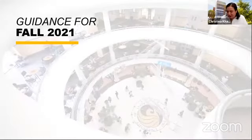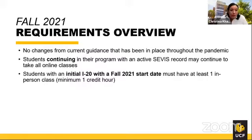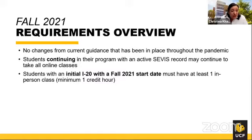Let's jump into the guidance for Fall 2021. SEVP recently clarified their guidance, and because of this clarification, there are no changes to the current guidance that's been in place throughout the pandemic. For continuing students enrolled at UCF for at least a few semesters, nothing changes from what was in place in summer and spring. Continuing students with an active SEVIS record can continue taking all online classes. However, students who have an initial I-20 with a Fall 2021 start date must have at least one credit in person.